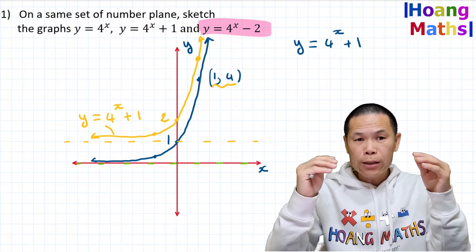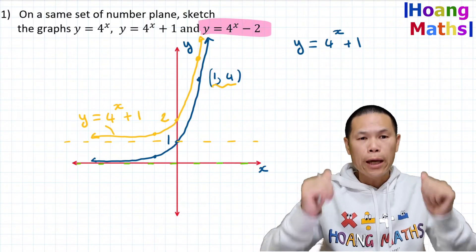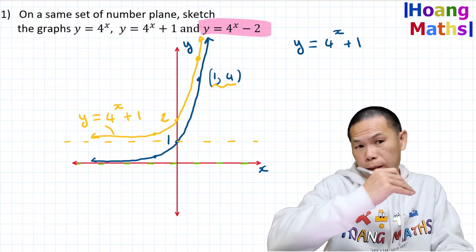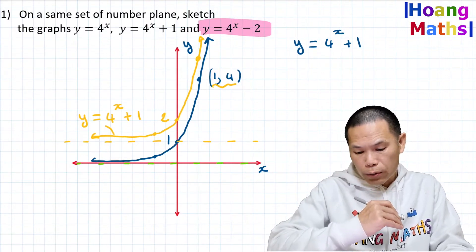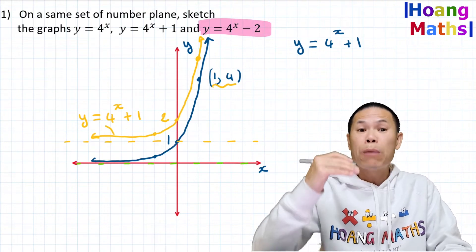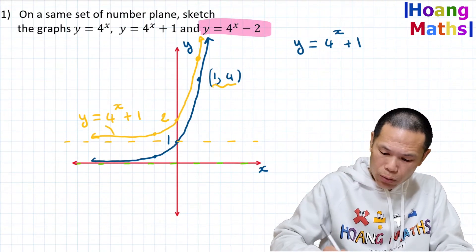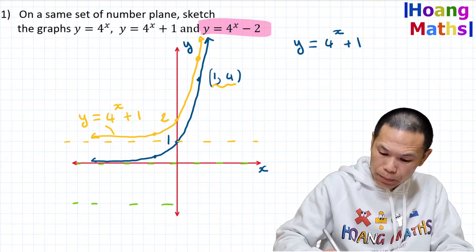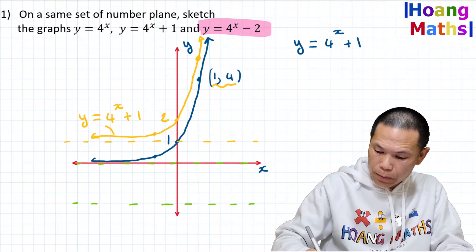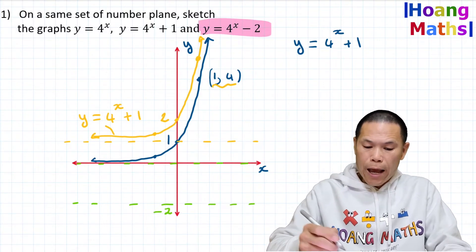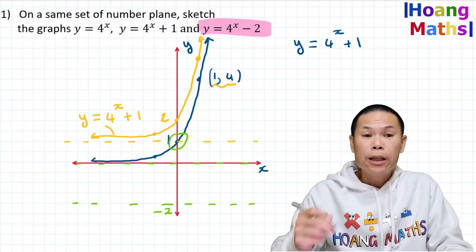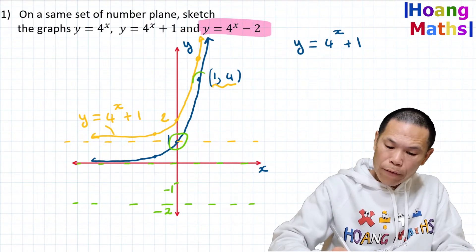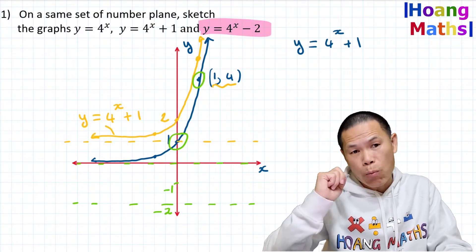For y = 4^(x-2), the whole graph shifts down two units. The horizontal asymptote moves from y = 0 down to y = -2. The point (0, 1) moves down two units to become (0, -1).